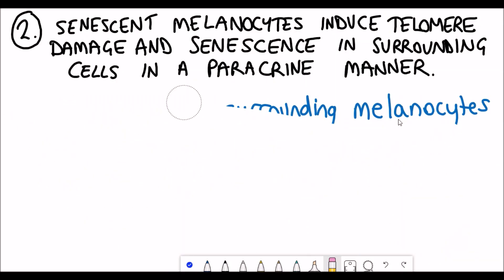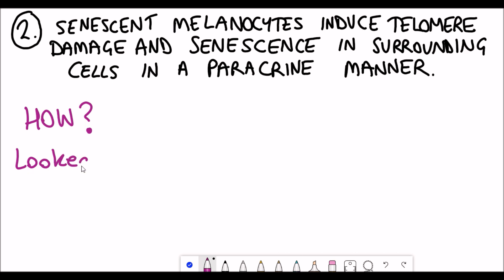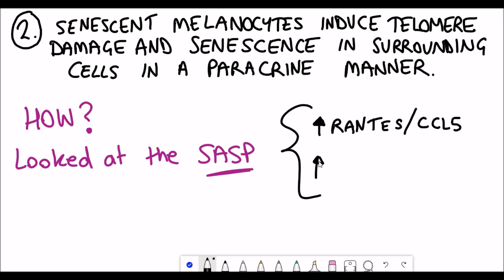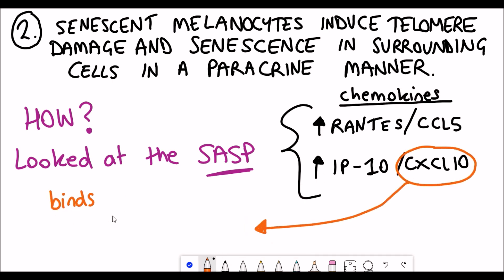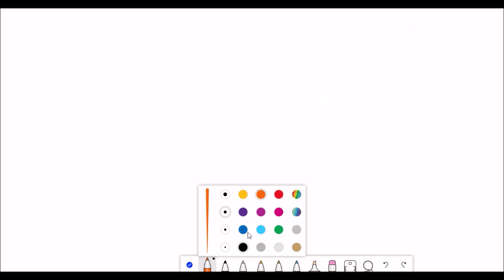These results made it clear that the keratinocytes were being impacted by the senescent melanocytes, but the question was how? What's actually going on? To do this they looked at the SASP, this secretory phenotype of the senescent cells, and they identified two proteins in particular that were much higher in levels: CCL5 and CXCL10, which are both chemokines and referred to as signaling molecules.